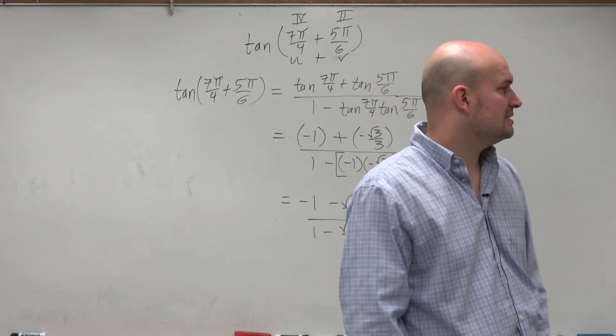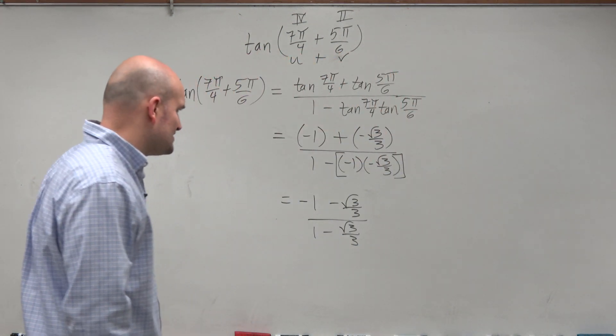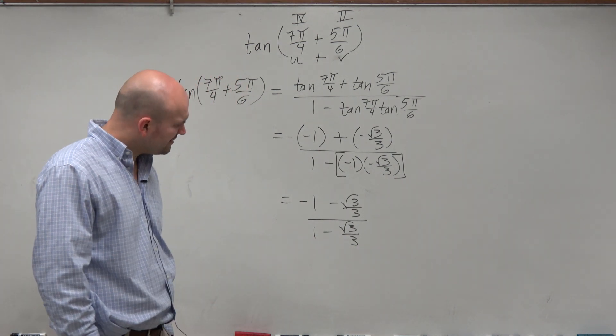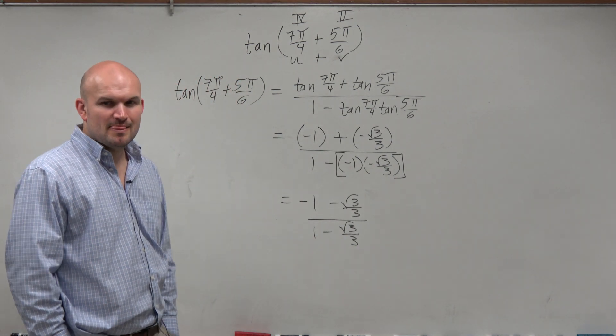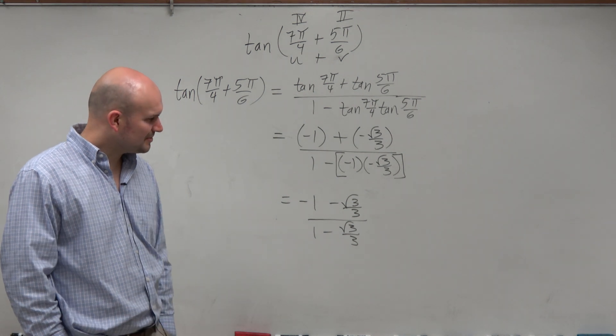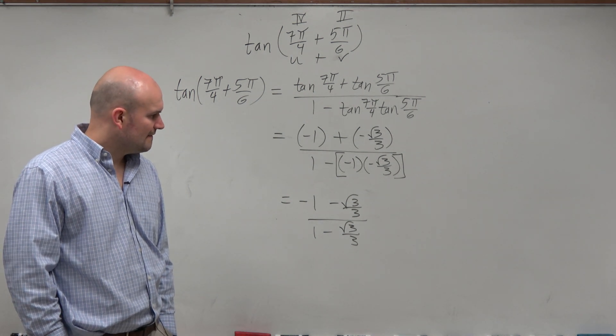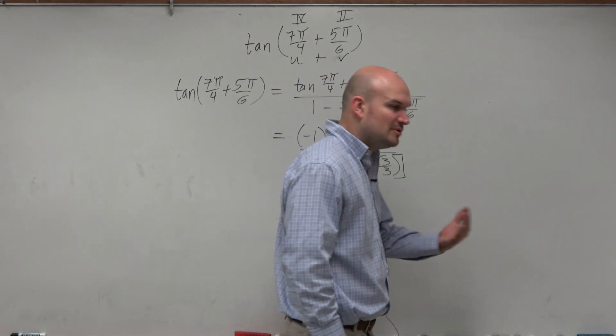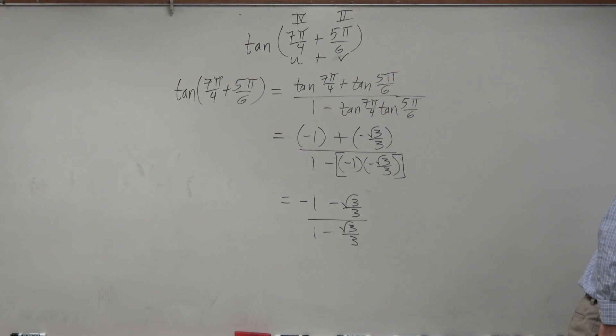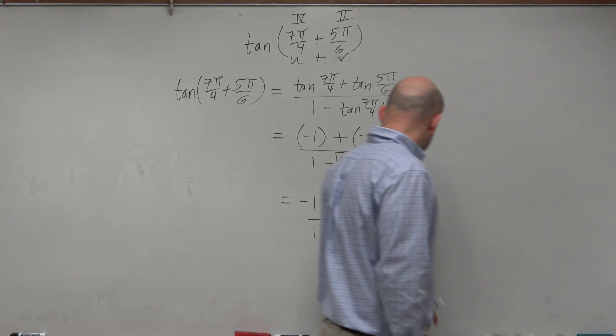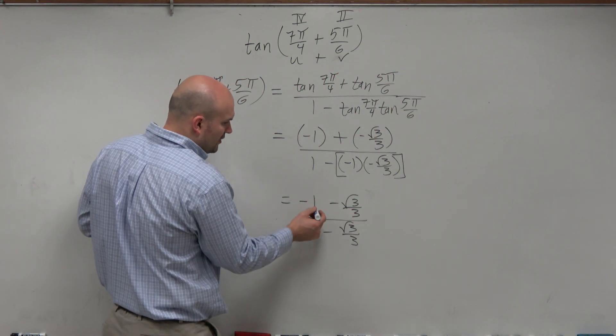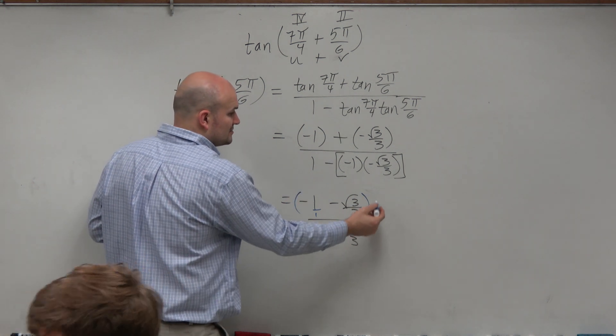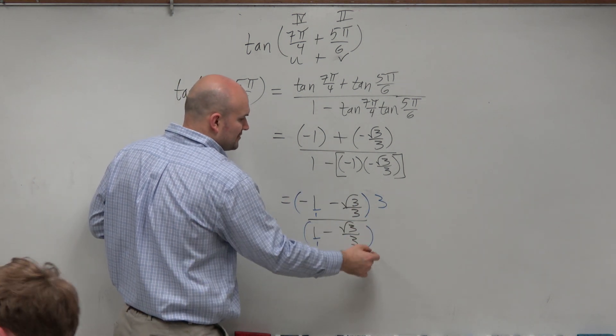We didn't rationalize the denominator in that chapter. We are going to rationalize, but not right now. We multiplied. We identified the LCD, and we multiplied everything by the common denominator. So let's look at these fractions. What is the common denominator of all of my fractions? Three. So just multiply the top and the bottom by three.